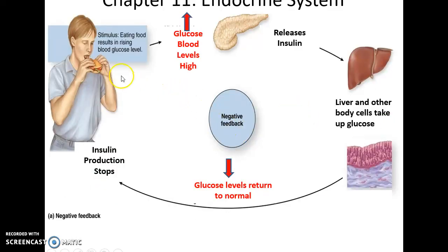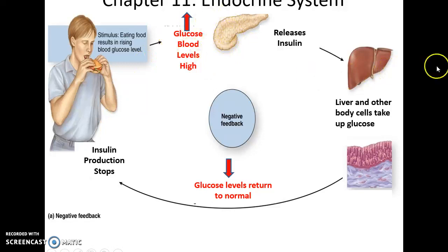For example, you eat a big sandwich, blood glucose levels rise, the pancreas detects this and releases insulin, which affects the liver and other cells to take up glucose out of the bloodstream. Glucose levels return to normal, which deactivates the pancreas and stops insulin production.